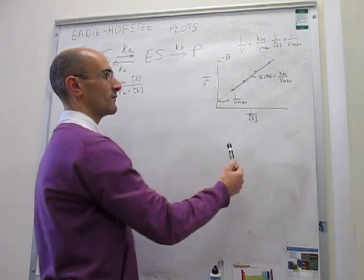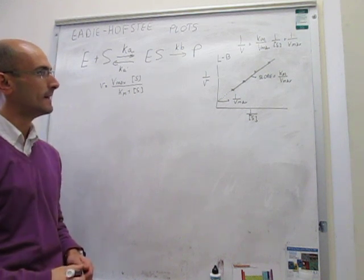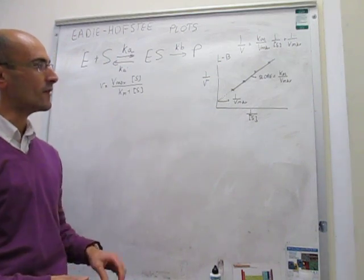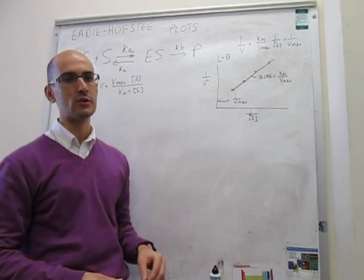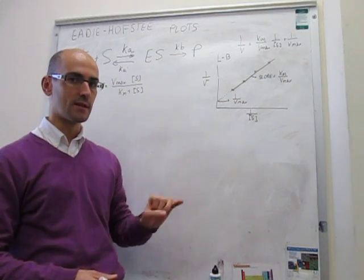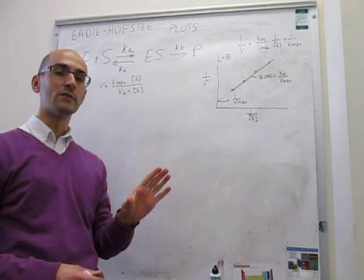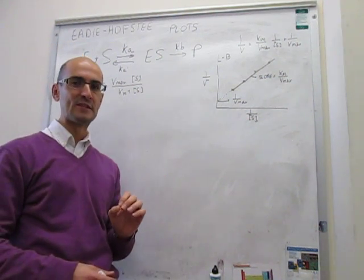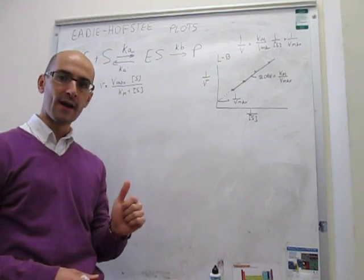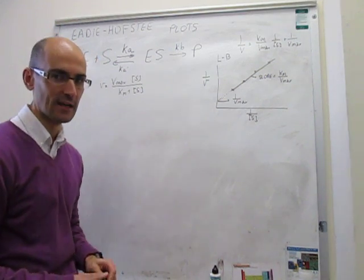From the Lineweaver-Burk plot, you can get Km and Vmax by plotting a few experimental points. However, in the next class we'll see there are actually issues with this representation, and there is a better method called the Eadie-Hofstee plot. What I want to convince you of is that the Eadie-Hofstee plot is a far superior method for obtaining Vmax and Km than the Lineweaver-Burk plot.